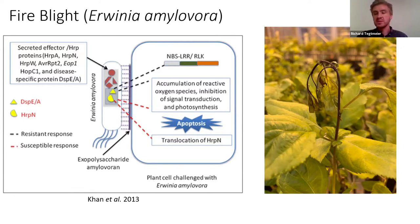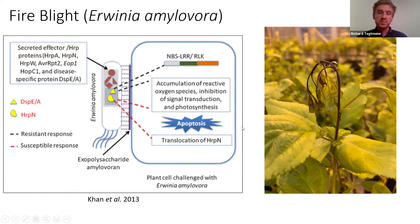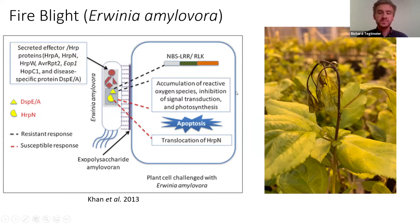You can see some of the common symptoms in the image on the right. We have the shepherd's crook, which is a bending wilting of the apical meristem, as well as some black necrotic tissue and bacterial ooze, which is an exudation of that exopolysaccharide.